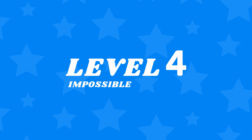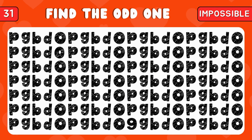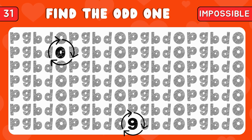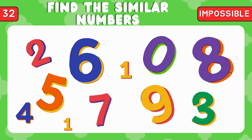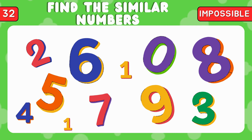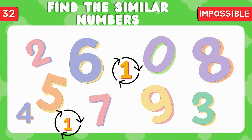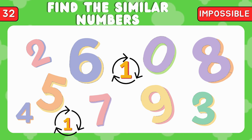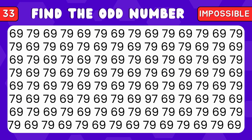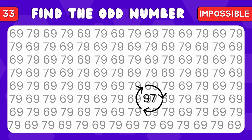Last one is impossible level. If you answer these questions, you will be genius. Can you find the odd numbers in letters? Amazing! The odd number is zero and nine. Which two numbers perfectly match each other? Out of these numbers, find the one that is different. Great eye, the number 97 is here.